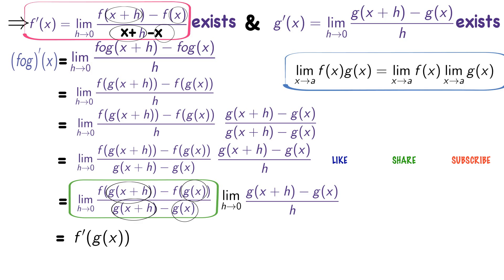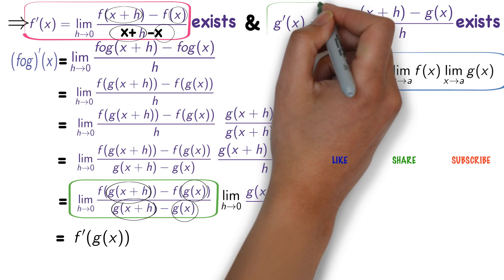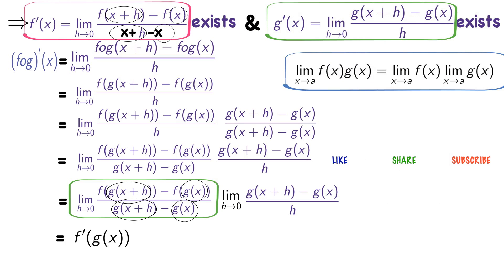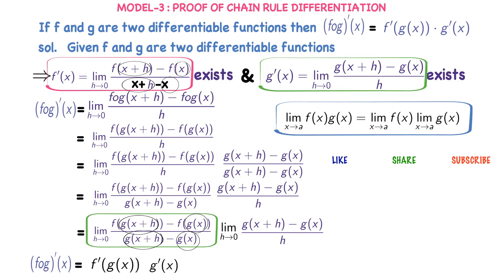From the first principle, f'(g(x)) = limit h→0 of [f(g(x+h)) − f(g(x))] / [g(x+h) − g(x)]. That is what is written in the green box. Also, limit h→0 of [g(x+h) − g(x)] / h is g'(x). Therefore, (f∘g)'(x) = f'(g(x)) · g'(x). Hence, we have proved the Chain Rule. Whenever we want to find the derivative of a function using the Chain Rule, we use this formula.